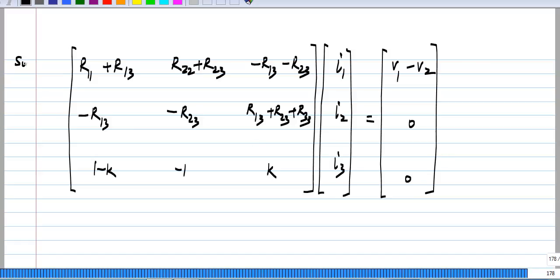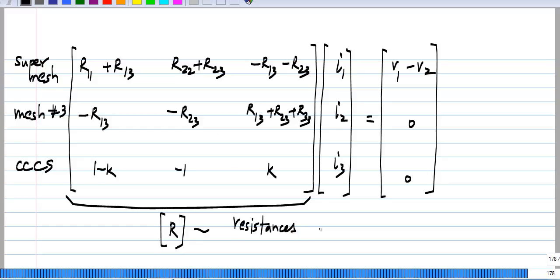The first row is for the super mesh, the second row is for mesh number 3, the third row is the constraint coming from the current controlled current source. And I will continue to call this R or resistance matrix, but you realize that this has both resistances and dimensionless constants. These entries are all resistances, and these entries are dimensionless constants.